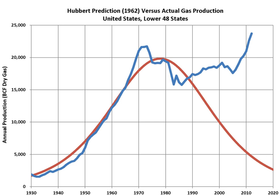Hubbert also predicted that natural gas production would follow a logistic curve similar to that of oil. His gas production curve for the United States was published in 1962.